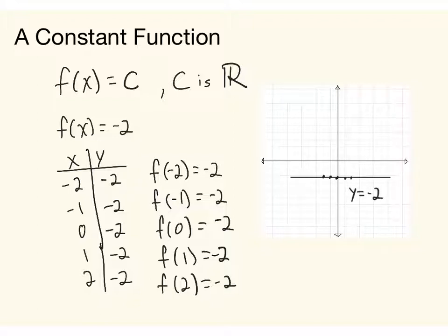And this then is what all constant functions will do. Whatever value the C value is, whatever real number it is, you would have a horizontal line intersecting the y-axis at that C value. So the very first, in fact, this is the basic first kind of function is a constant function.